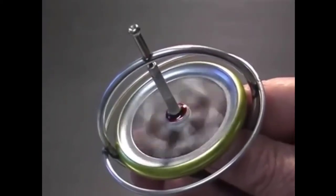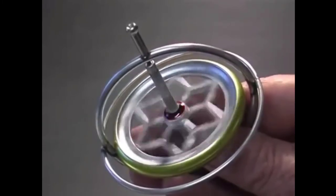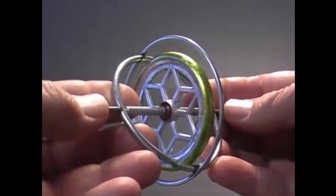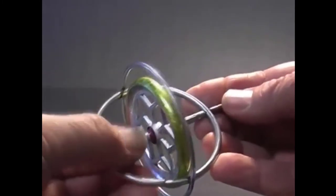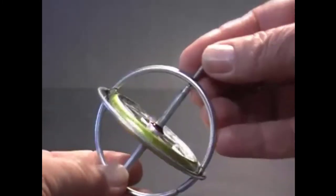This is a gyroscope. It consists of a metal wheel mounted on an axle. The wheel and axle spin freely, secured in a metal frame. This simple device can behave in the most unexpected ways.